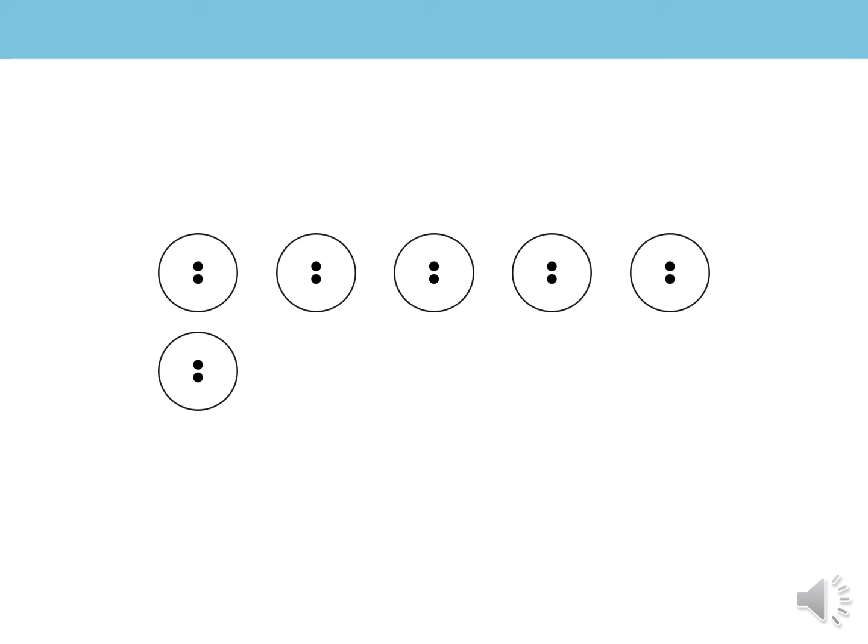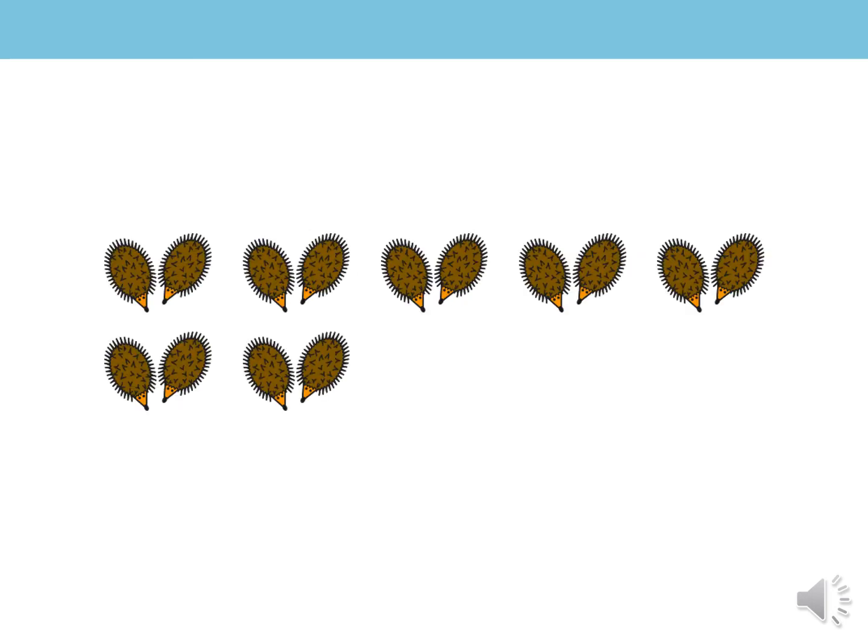Right, I've got some counters here, and they are organised into groups of twos. I can also organise any object into groups of twos. So right now I've got hedgehogs, and they're in groups of twos. If it's in a group of two, it's also known as a pair.